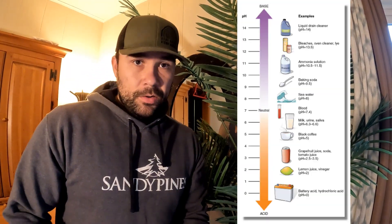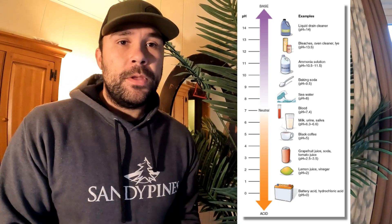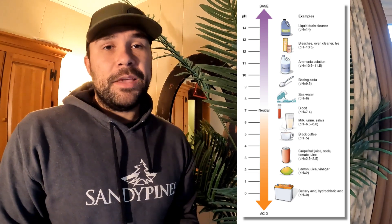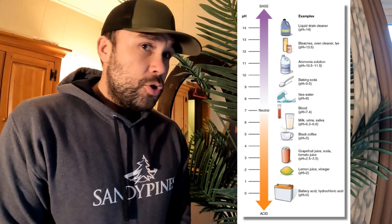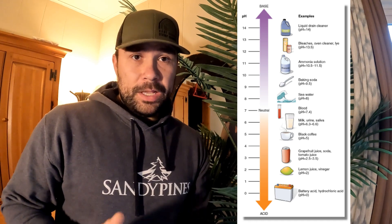Soil has its own pH. pH is measured on a scale from 0 to 14 — 7 is neutral, anything above 7 is acidic, and anything below 7 is alkaline. Trees do best in a 6 to 6.5 environment on the scale. You can raise or lower the pH of the soil — lime raises the pH and sulfur lowers the pH.